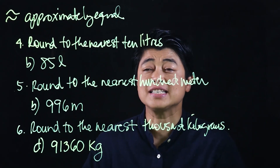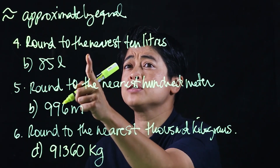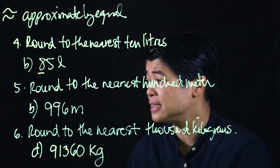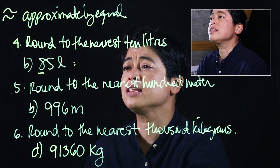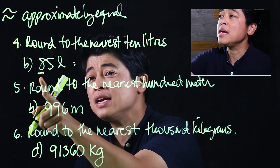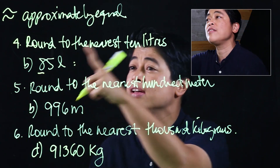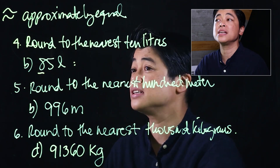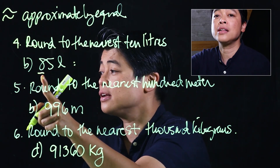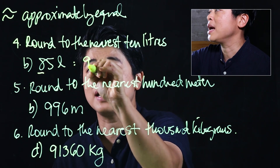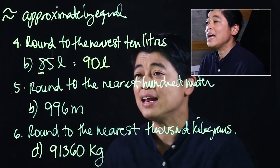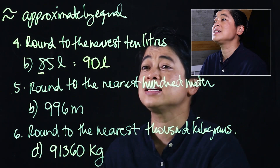In this first set of problems, the first one says round to the nearest 10 liters. We underline the tens place. If we look at the number after the tens place and it's five or more, we increase the number and everything else thereafter becomes a zero. Since five is after the underlined number, that means it will be a nine followed by a zero — so to the nearest 10 liters, 85 is 90.